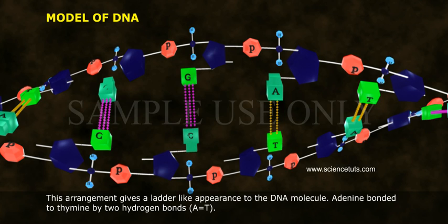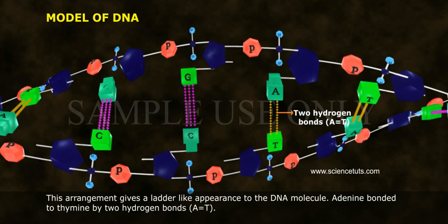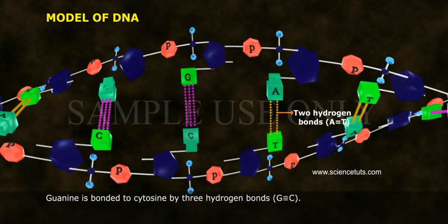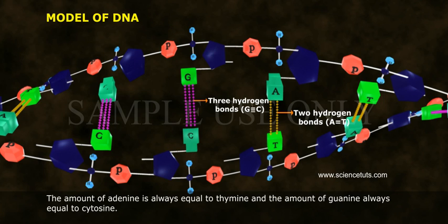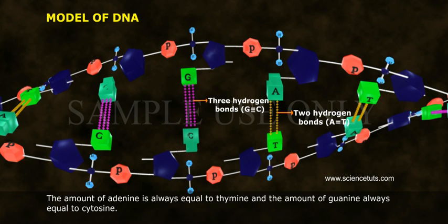Adenine is bonded to thymine by two hydrogen bonds (A=T double bond). Guanine is bonded to cytosine by three hydrogen bonds (G≡C triple bond). The amount of adenine is always equal to thymine, and the amount of guanine always equals cytosine.